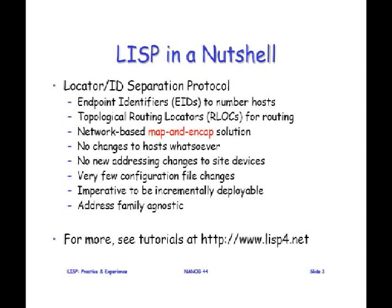We tried to build something that didn't require host changes, because host changes always seem to slow us down a lot. No new addressing in sites — we want sites to be able to use their own addressing schemes and devices. We're trying to keep the configuration down. We wanted it to be incrementally deployable and address-family agnostic — IPv4, IPv6, MAC addresses, whatever. There are tutorials on www.lisp4.net with some of the talks we've been giving around.